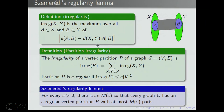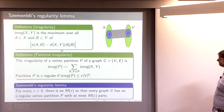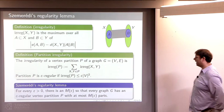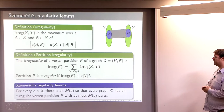As a quick recollection from yesterday, there's this notion of irregularity in a graph, or rather between two vertex subsets of a graph. It measures how uniform the edges are between the two vertex subsets. If it's small, the graph between them is very pseudorandom; if it's large, it's not. There's a notion of irregularity of a partition where you sum up the irregularity over all pairs of parts, and if that's small, you can think of your graph partition as being epsilon regular. Szemerédi's celebrated regularity lemma says that for every epsilon greater than zero, there's an M of epsilon such that every graph has an epsilon regular vertex partition with at most M of epsilon parts.